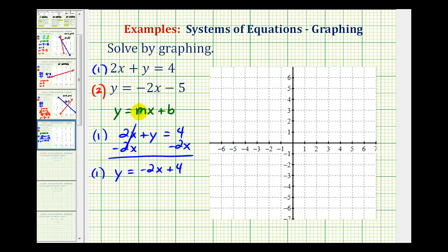Notice the slope of both lines is negative two, but the y-intercepts are different. The first line has a y-intercept of positive four. The second line has a y-intercept of negative five.